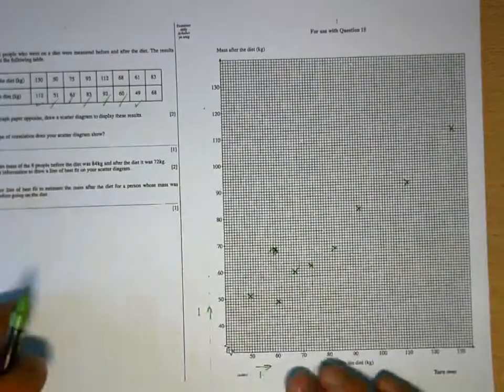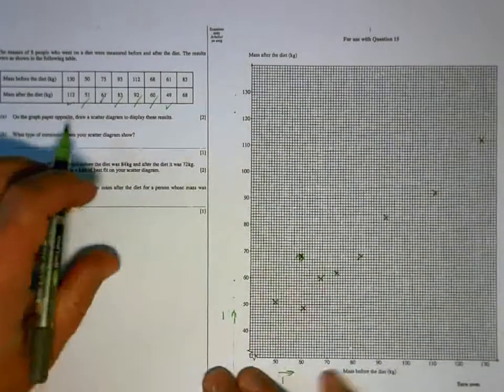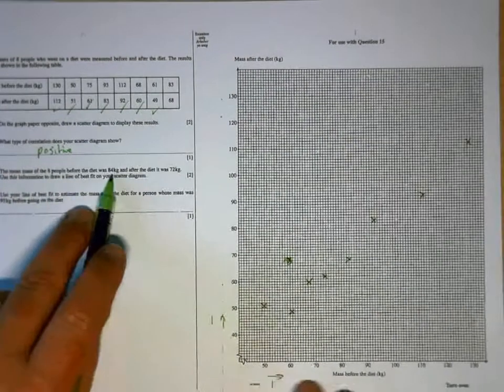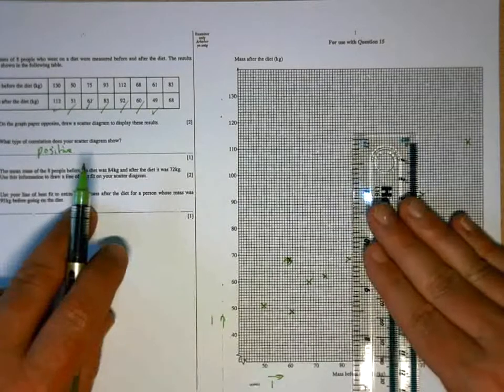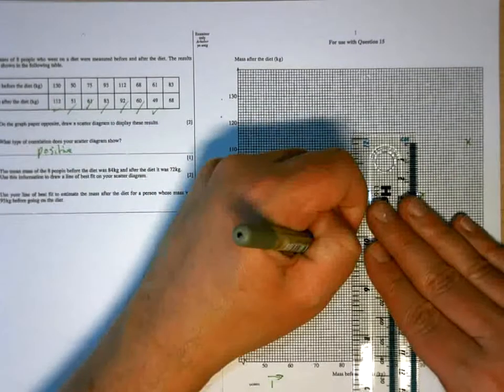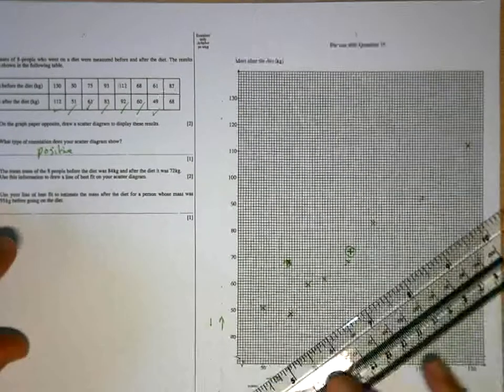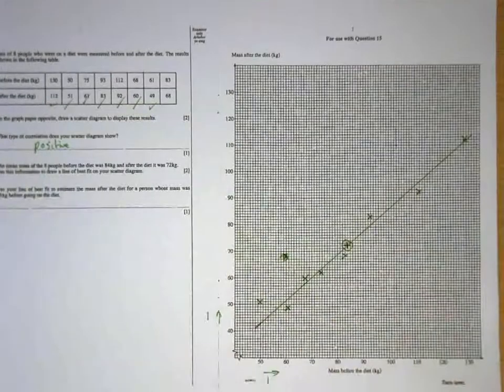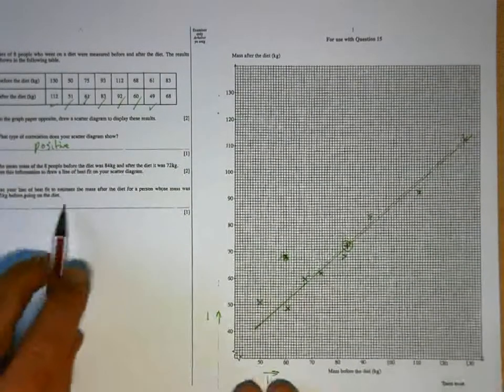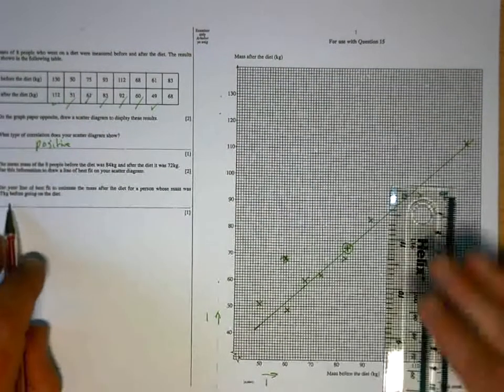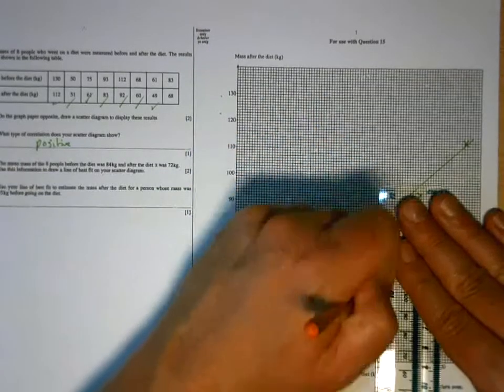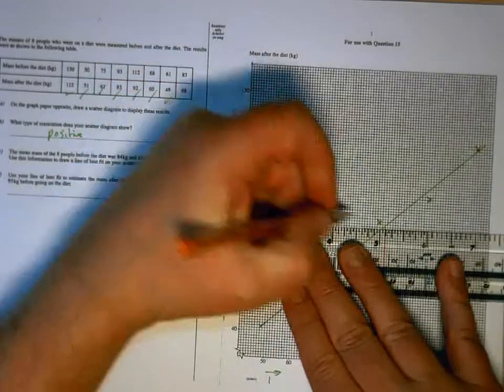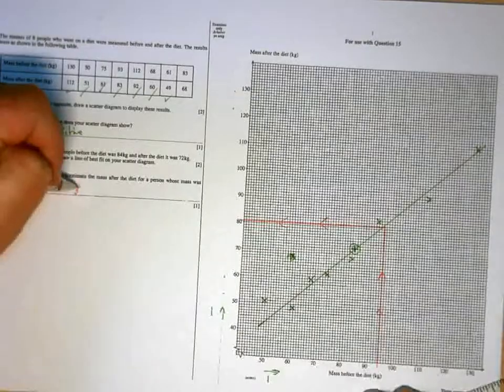So what type of correlation does our scatter diagram show? As one increases, so does the other, so it's positive. The mean of the 8 people before the diet was 84, which is there. After was 72, which is there. So there's our mean point. Draw the line of best fit. So it's going to go through there and it's going to be a similar kind of slope. So it's going to look something like that. And then use your line of best fit to estimate the mass after the diet for a person whose mass before it was 95. So 95 is there. So coming off 95, I'm reading along in the other direction. 80 kilograms would be my estimate.